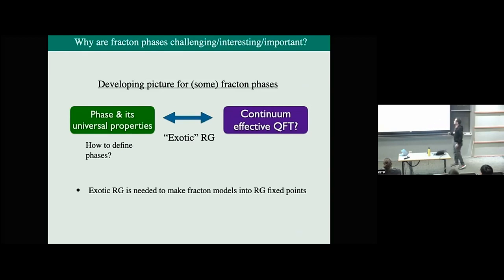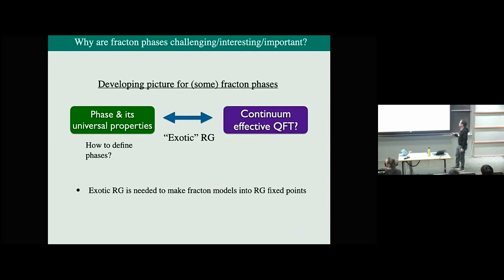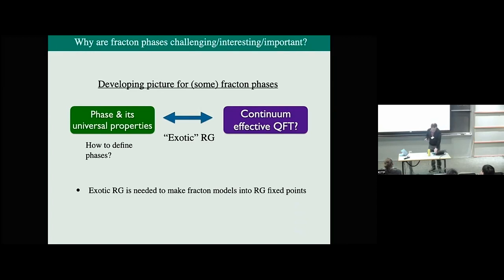So what's different in fractons? There's a developing picture which I want to explain and then actually revise — one that replaces the more conventional one I started with. We have some fracton phase and its universal properties. The thing that's clearest about this picture is that we need to change what we mean by renormalization group. In order to get an RG fixed point for fracton phases, we need some kind of exotic RG.